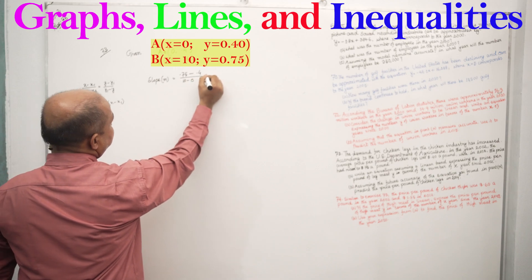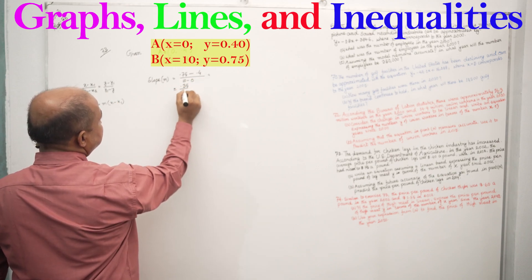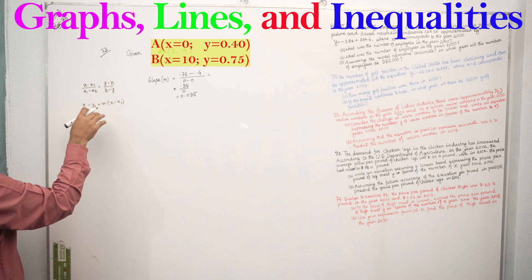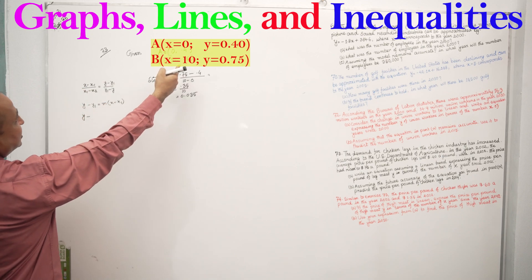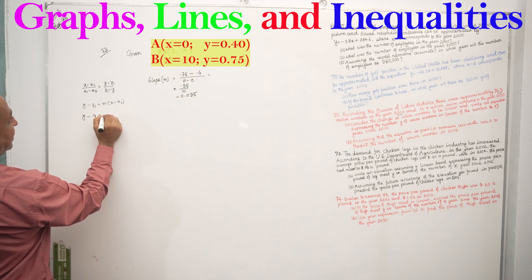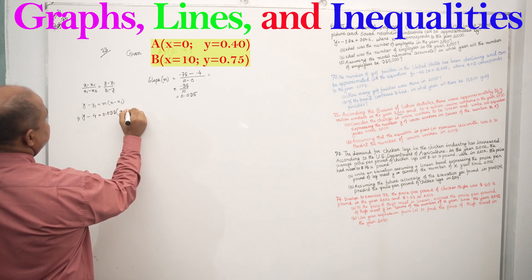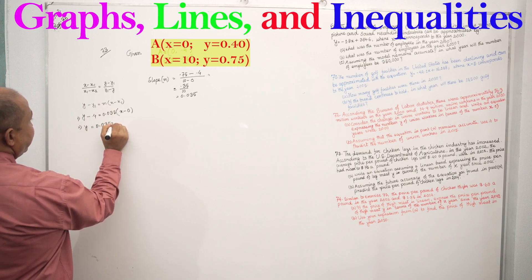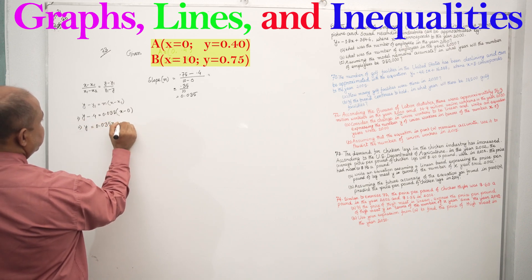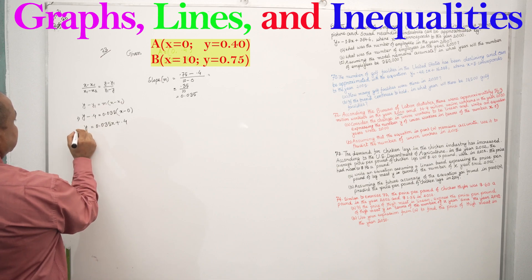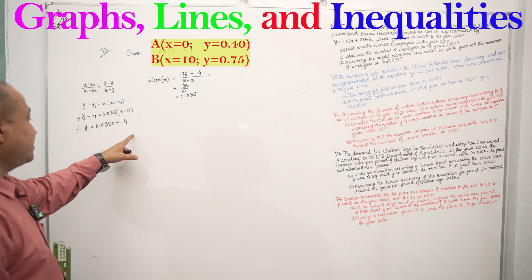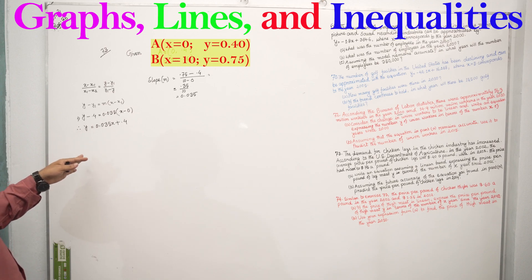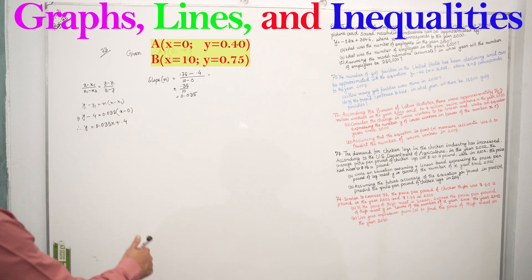The slope equals Y2 minus Y1 divided by X2 minus X1, which is 0.75 minus 0.40 divided by 10 minus 0. That equals 0.35 divided by 10, equals 0.035. Using point-slope form, Y minus Y1 equals 0.035 times x minus x1, with x1 equals 0. So Y equals 0.035x plus 0.4. This is our equation for exercise 73.